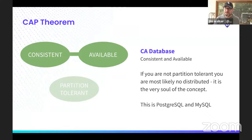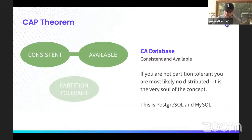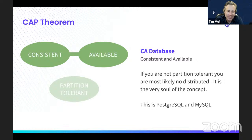A CA database — consistent and available — is basically not distributed, because without partition tolerance you're invalidating the entire concept of being distributed. Partition tolerance is at the very soul of the concept of being distributed. So we wouldn't really talk about a CA database in the distributed sense. CA databases are Postgres and MySQL — a single database on a single server that's going to be available, going to be consistent, with no partitions to deal with.